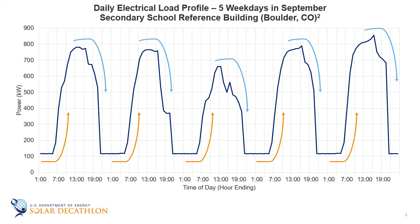It's important to note that not every building's load profile looks like this. In fact, this building's load profile would look different if we picked a different season, like winter for example, where air conditioning wouldn't be used. Load profiles depend on various factors like the type of building and how it's used, the climate zone where it's located, and the energy sources used for heating and cooling. Typically, though, buildings use less electricity at nighttime.